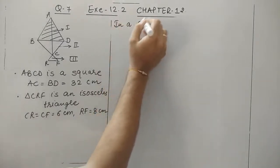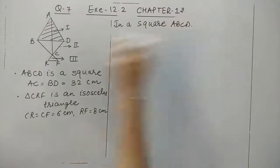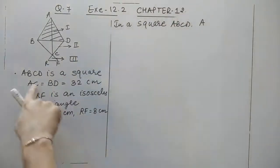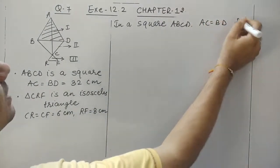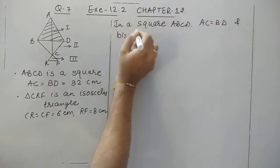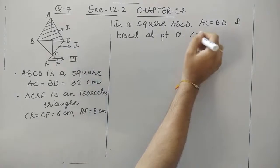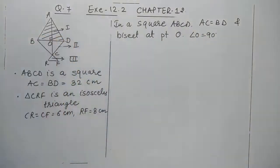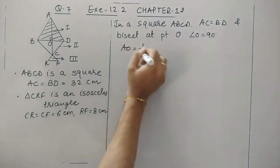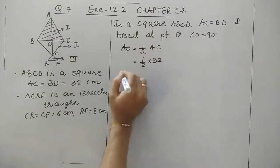In square ABCD, diagonals are equal: AC equals BD, and they bisect at point O, so angle at O is a right angle. The length of AO becomes half of AC. AC is given as 32, so half of that is 16 centimeters.